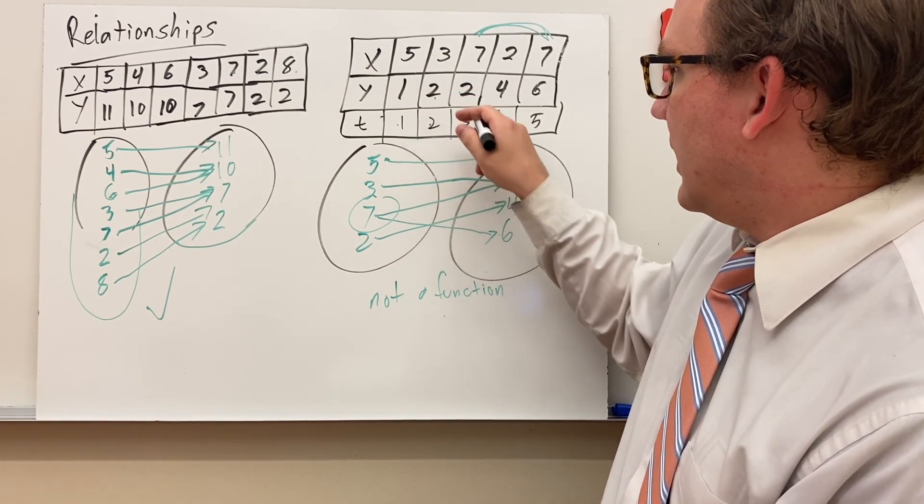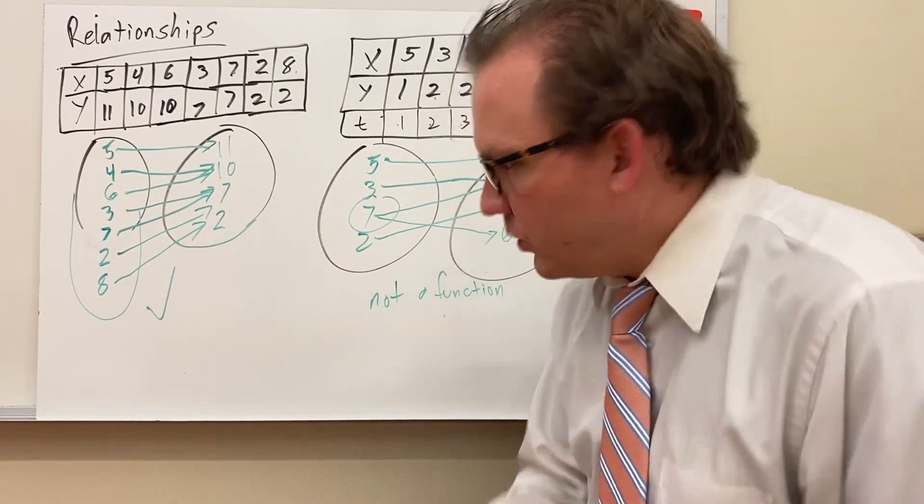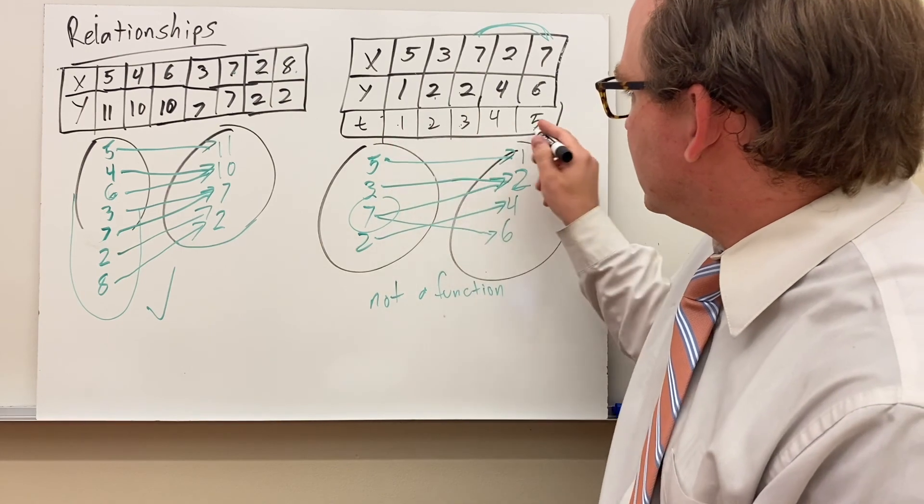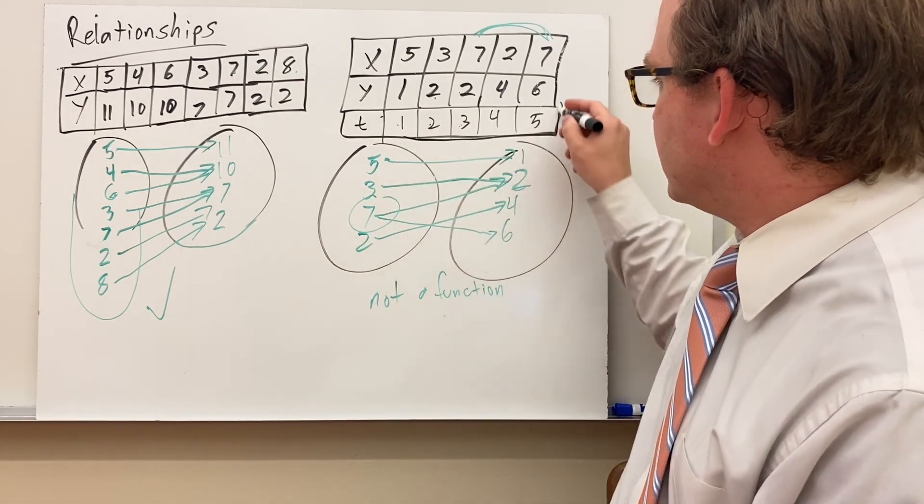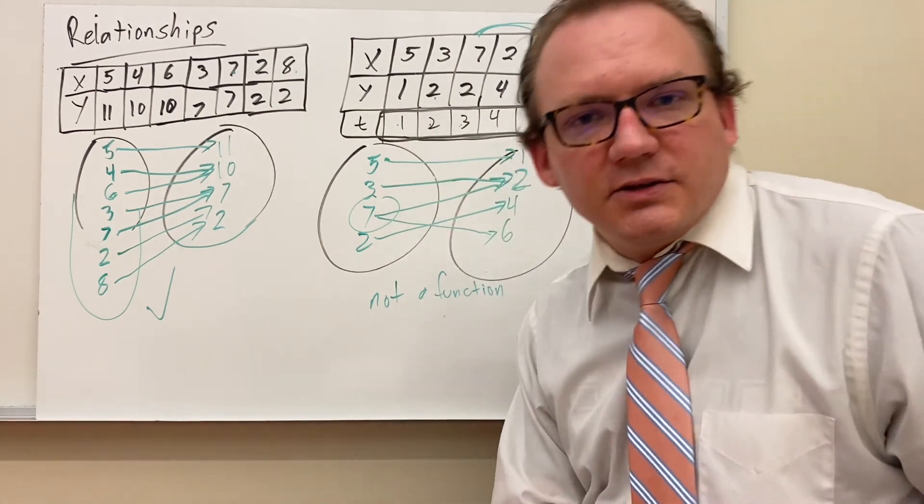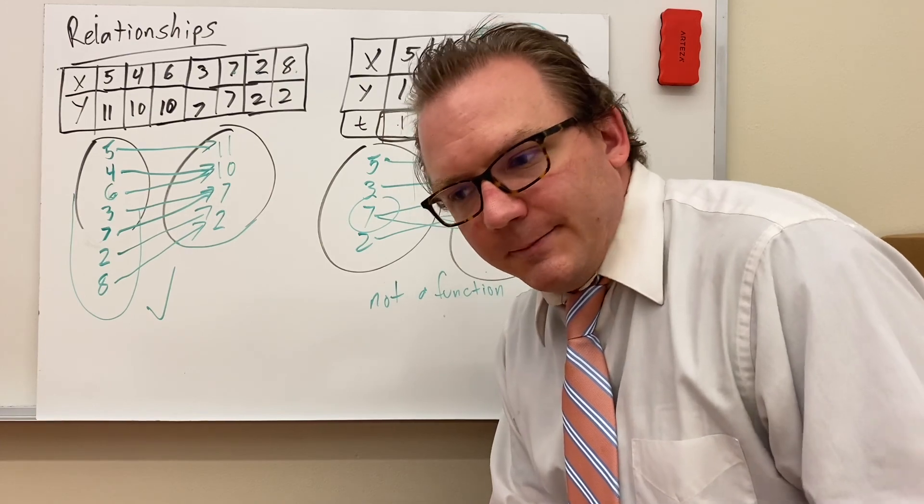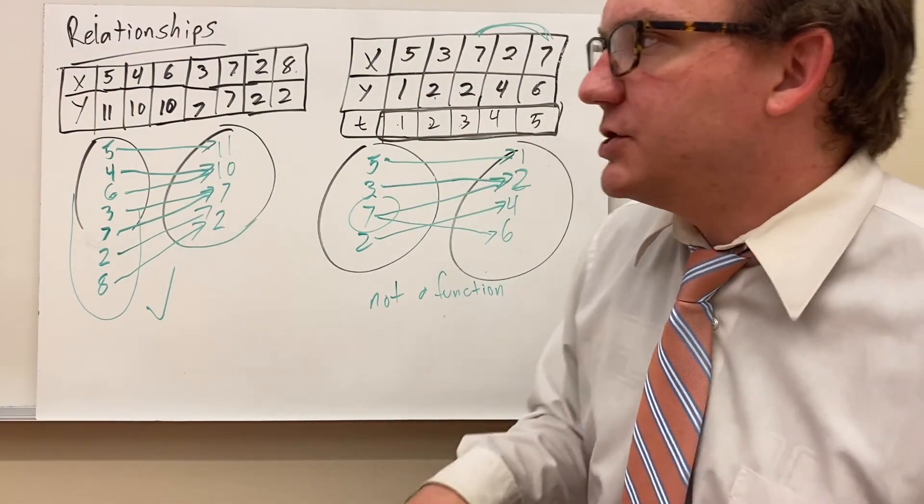Meaning time goes 1, y is 1. Time is 2, y is 2. Time is 3, y is... If we made time the input, would y be a function? And the answer is yes, because all you need to do is look at these input values and none of them repeat: 1, 2, 3, 4, 5. Since none of the input values repeat, the output doesn't really matter and it is a function.